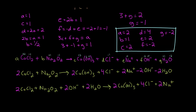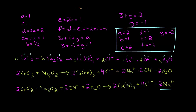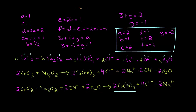Let's verify everything is balanced. Cobalt: 2 on the left, 2 on the right. Chlorine: 2 times 2 equals 4 on the left, 4 on the right. Sodium: 2 on both sides. Oxygen: 2 plus 2 plus 2 equals 6 on the left, 3 times 2 equals 6 on the right. Hydrogen: 2 plus 4 equals 6 on the left, 3 times 2 equals 6 on the right. The equation is balanced.